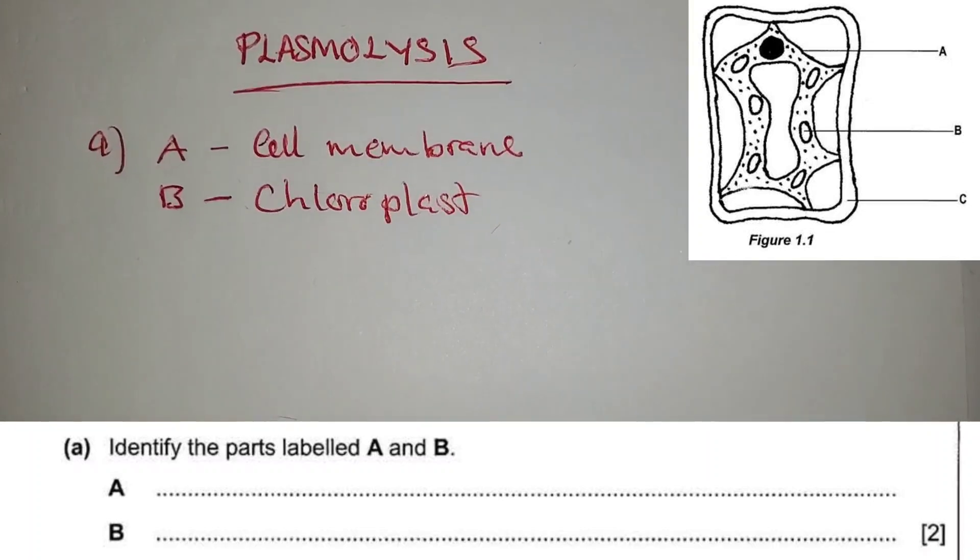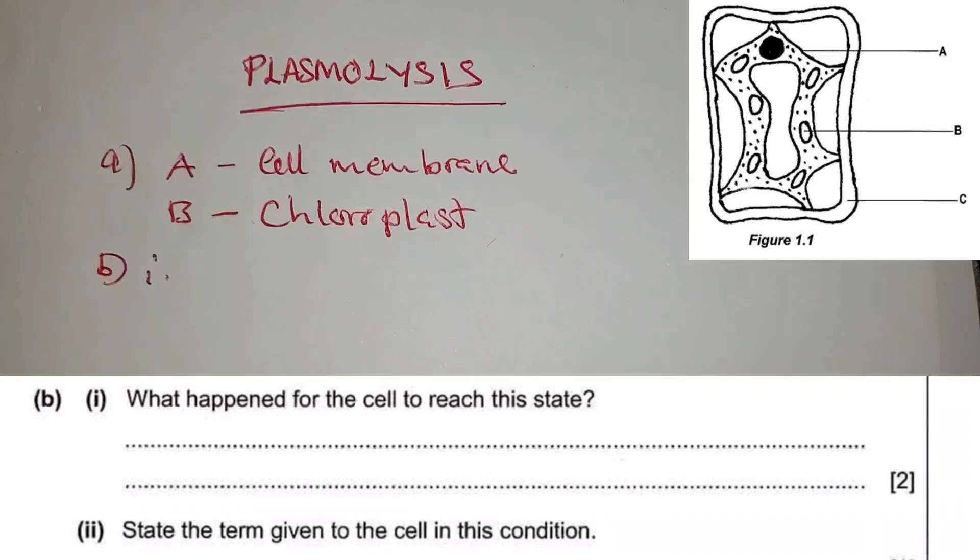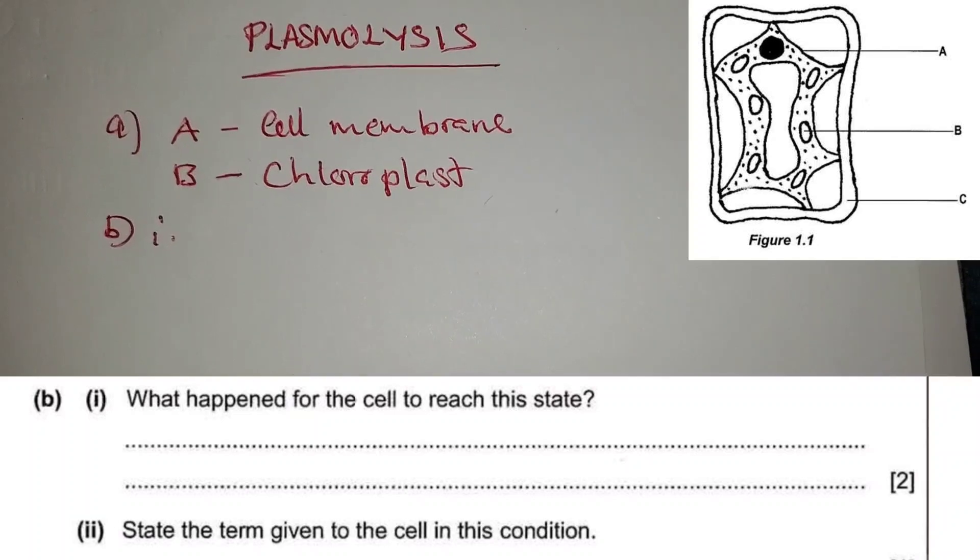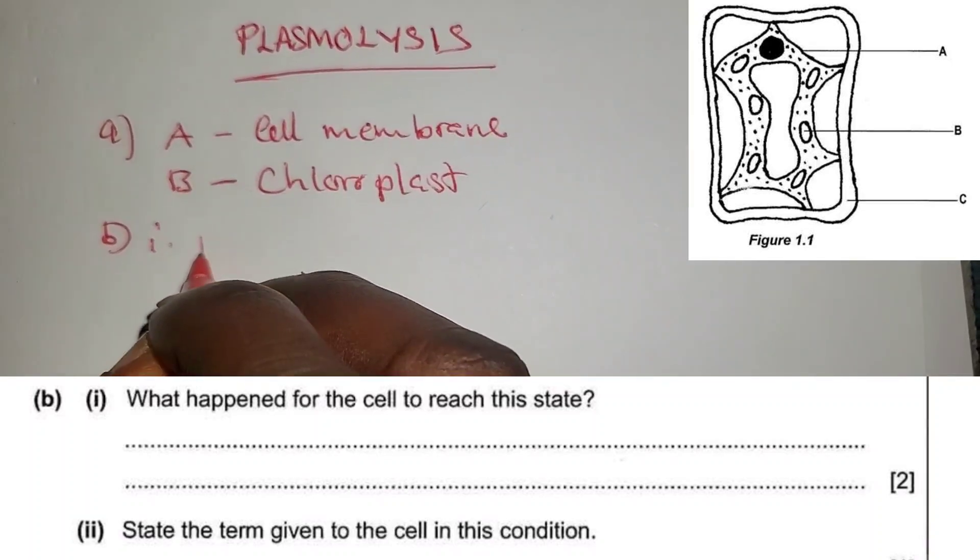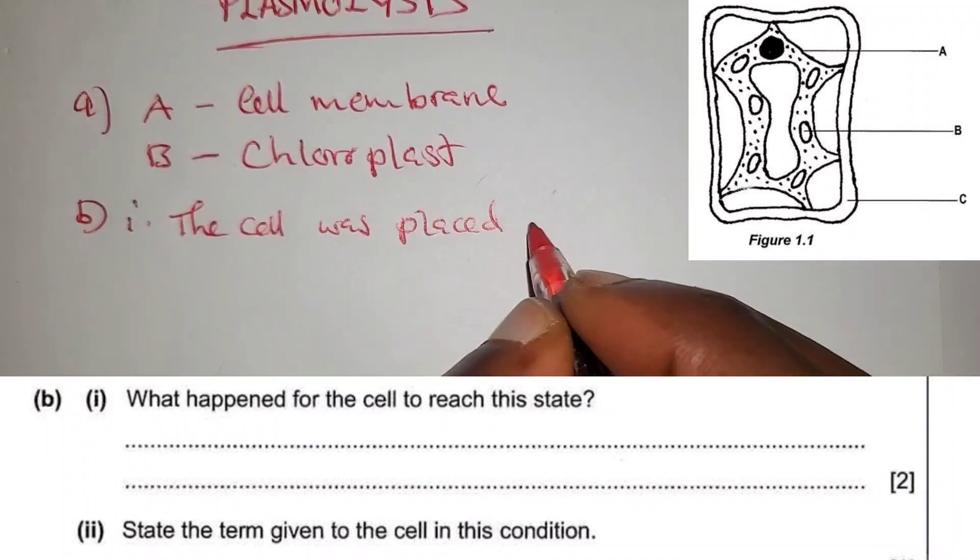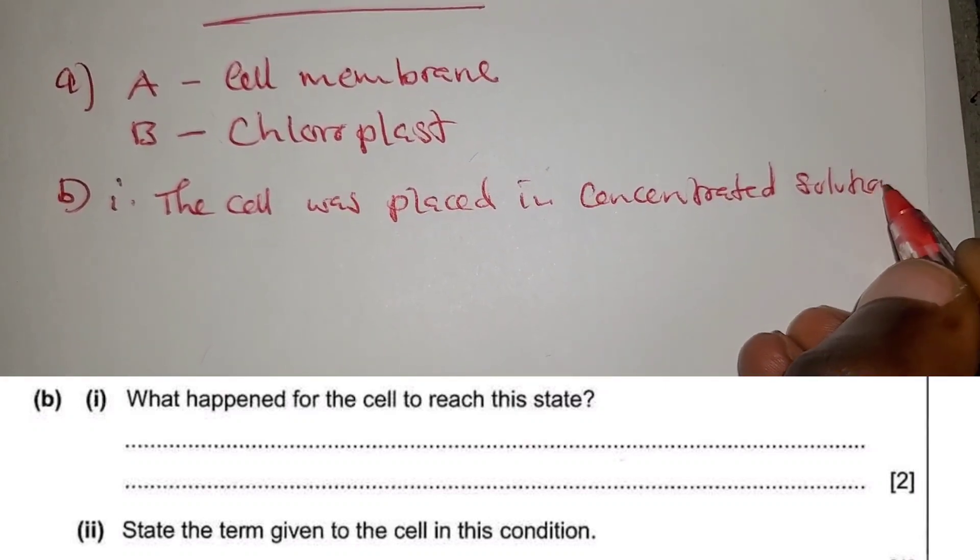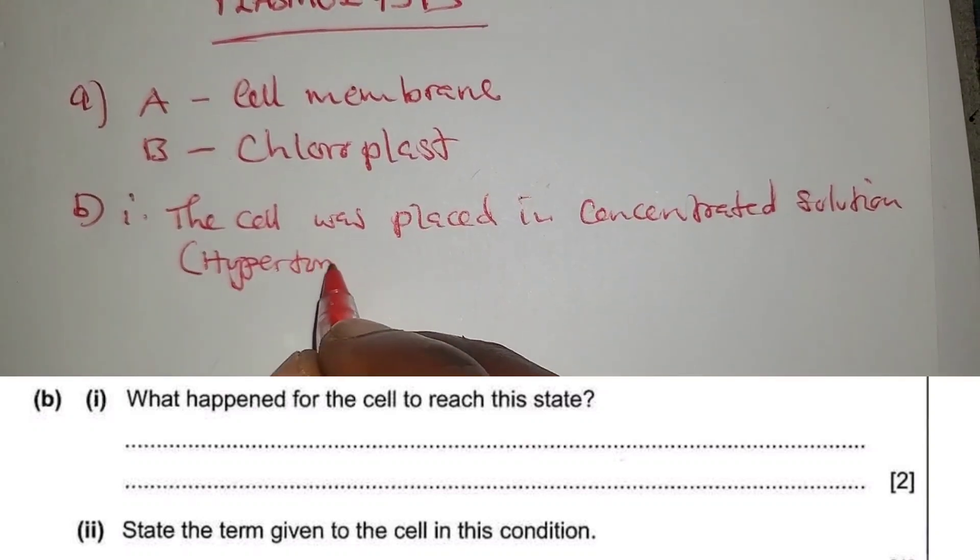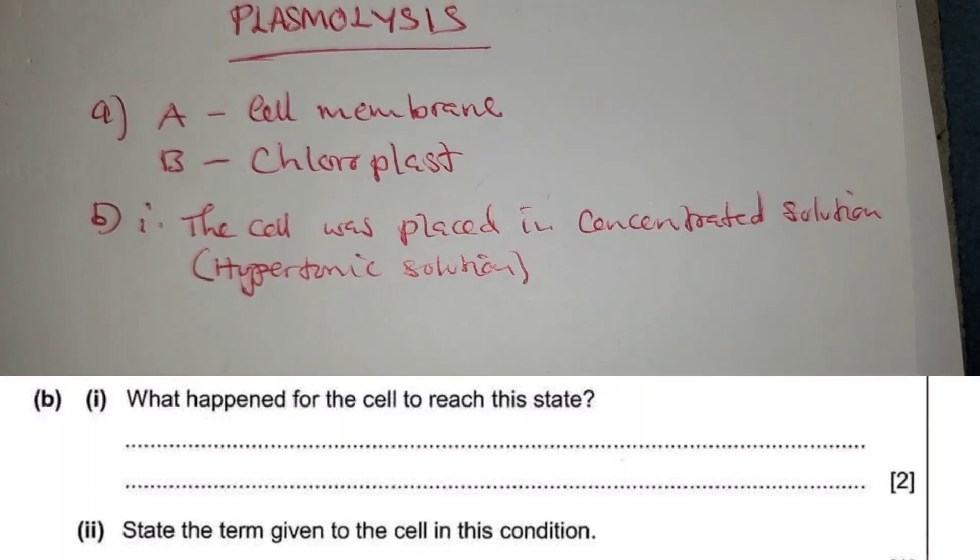Then B(i) asks what happened for the cell to reach this state. The cell was placed in concentrated solution, in brackets you can write hypertonic solution.